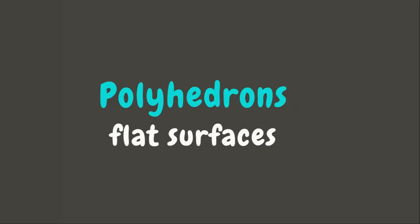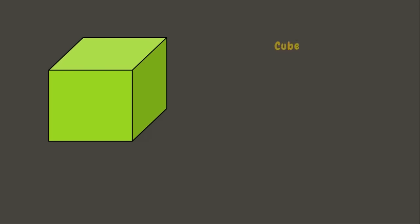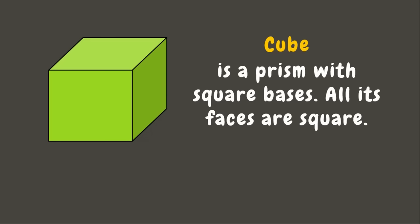Polyhedrons are solid figures which have flat surfaces. First, we have prisms. Prisms are polyhedrons that have two congruent parallel faces called bases. We have cube, triangular prism, rectangular prism, and many more. A cube is a prism with square bases and all its faces are square.